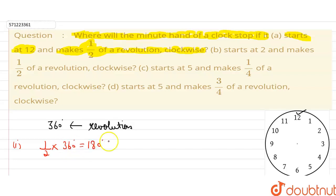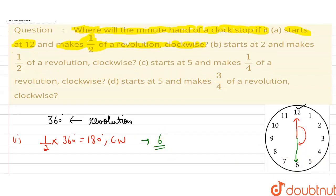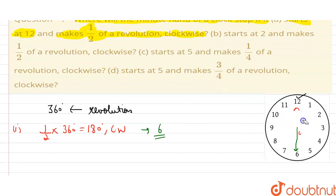Half of a revolution is equal to 180 degrees, and it is clockwise. So if it is at 12 and makes half of a revolution, it has to cover 180 degrees. That means it should end up at 6. So the minute hand will end up at 6.